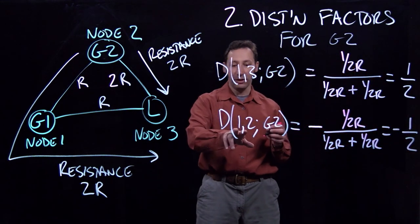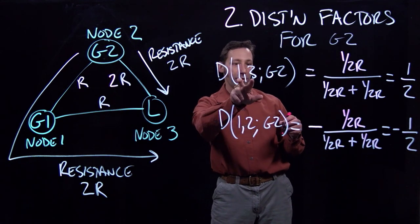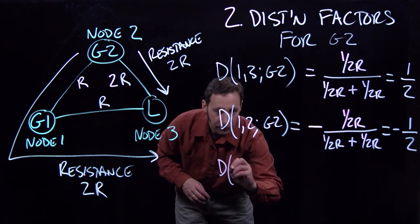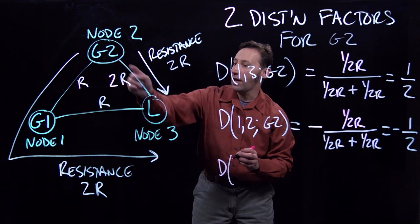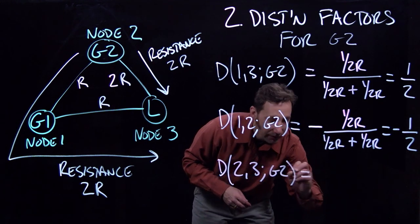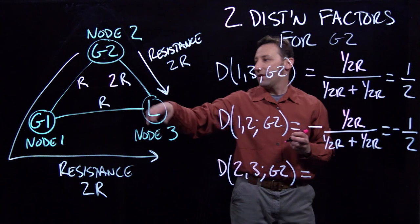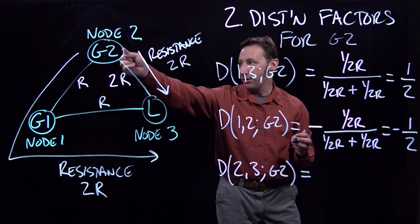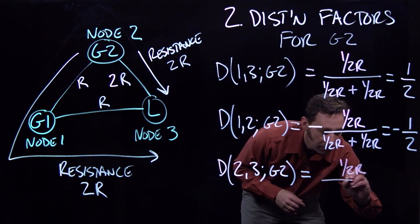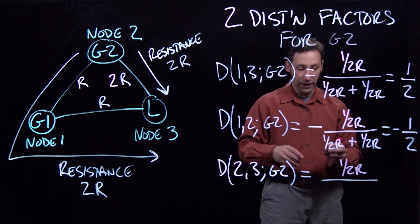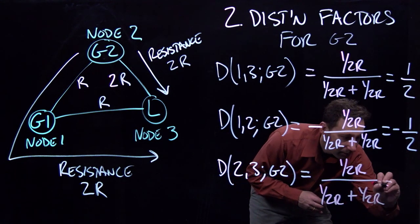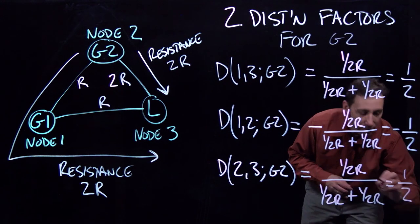The distribution factor on line 1 to 2 has the same magnitude as line 1 to 3, just with a negative sign. Finally, we calculate the distribution factor on line 2 to 3 from G2. In the numerator, we have the inverse of the resistance of the direct path from 2 to 3, which is 1 over 2R. The denominator is the same as in the other distribution factors, and again we get one half.